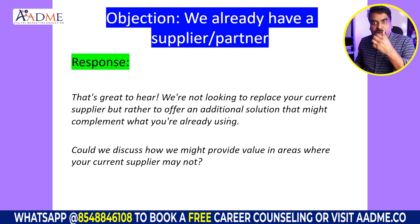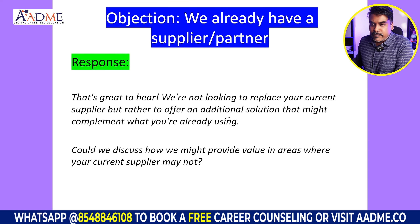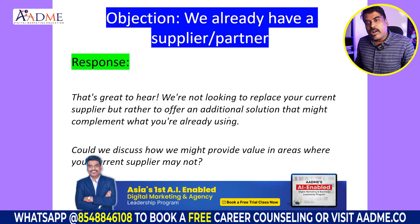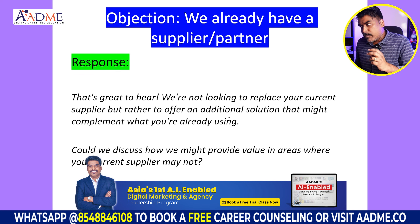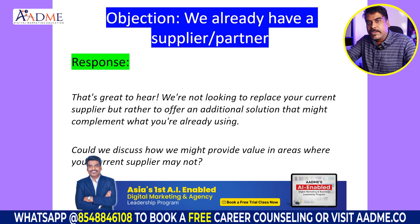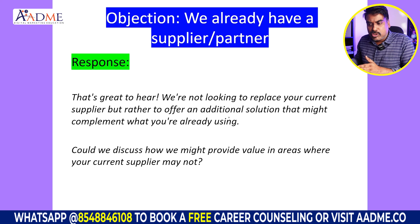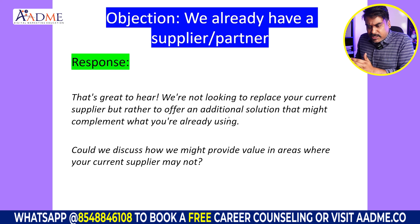Then comes the objection: 'We already have an agency, supplier, or partner.' Respond: 'That's great to hear. We are not looking to replace your current supplier, but rather to offer an additional solution that might complement what you're already using. Could we discuss how we might provide value in areas where your current supplier may not?' Don't talk about replacement — talk about complementing or augmenting their current team. Say: 'We are not looking to replace. Just wanted to check if there's any specific requirement where we can complement your existing team.' It sounds positive.